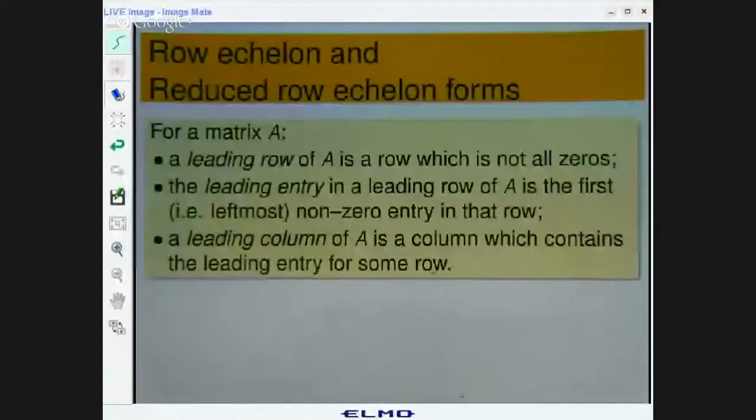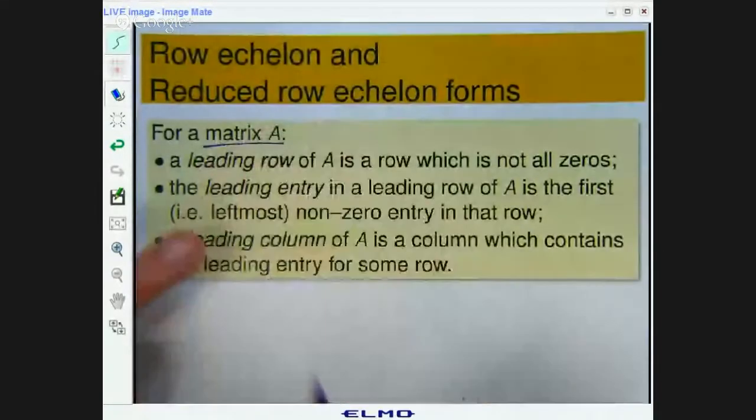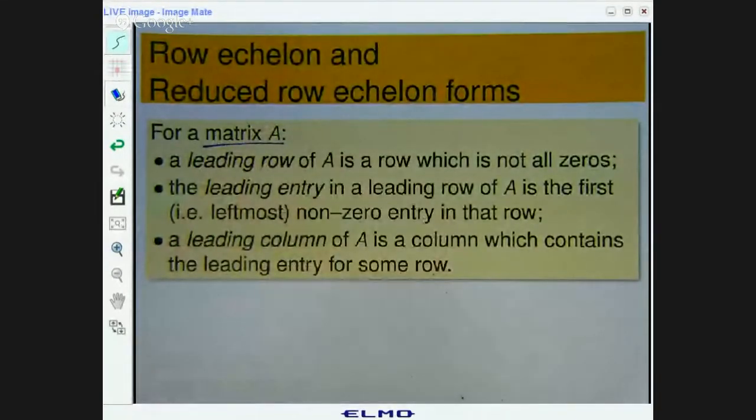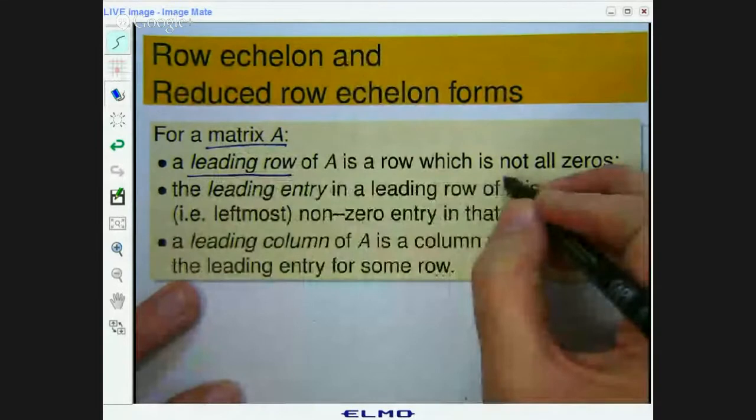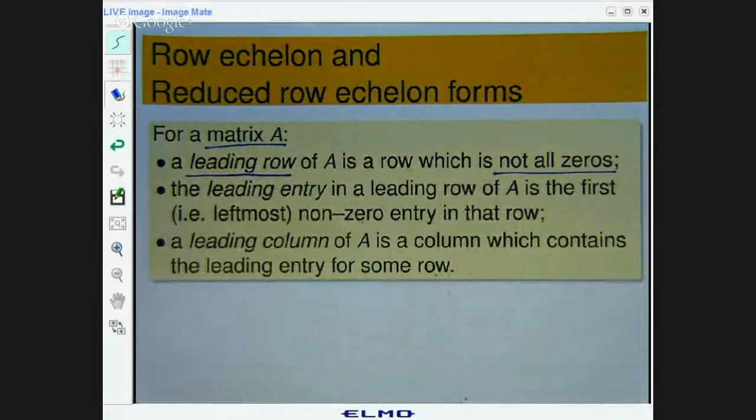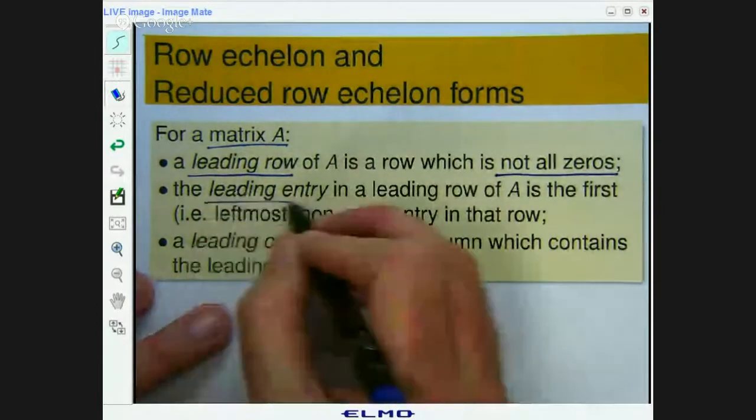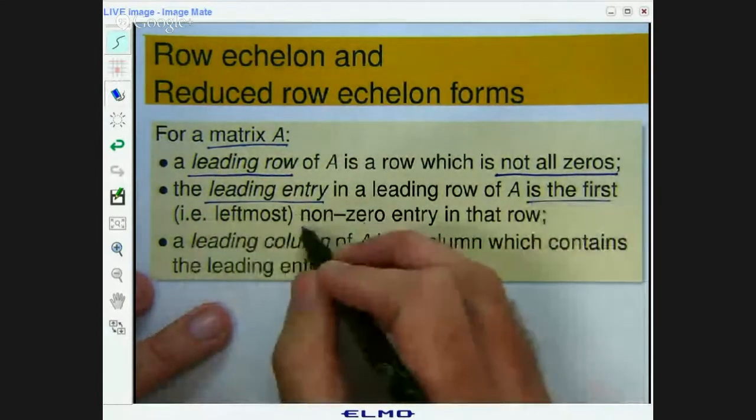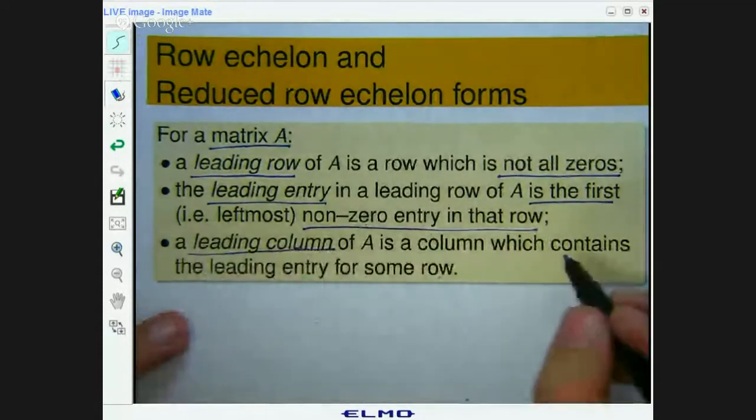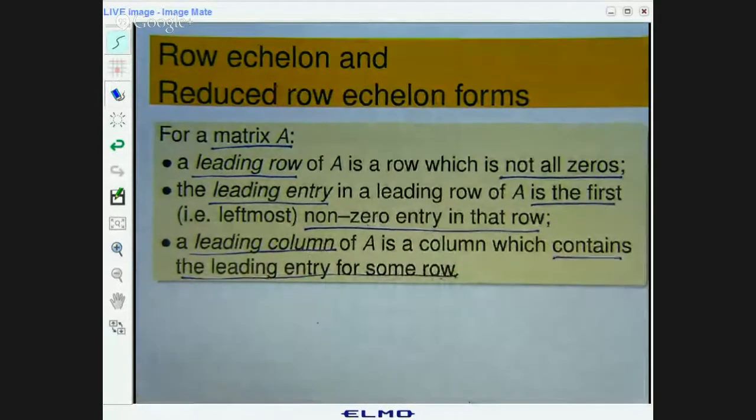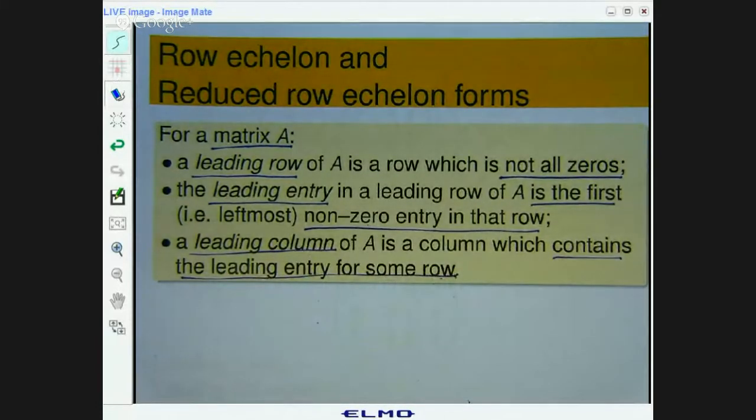Ok, so firstly some definitions. Suppose you've got a matrix A. There are three definitions here. A leading row is a row which is not all zeros. The leading entry in a leading row is the first, the leftmost, non-zero entry in that row. And thirdly, a leading column is a column that contains the leading entry for some row. Ok, that's quite a lot to take in. So let me give you a simple example and see where this all fits in.